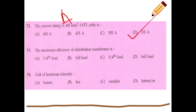The maximum efficiency of a distribution transformer occurs at half load. The unit of luminous intensity is the candela.